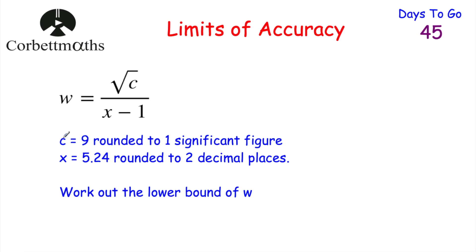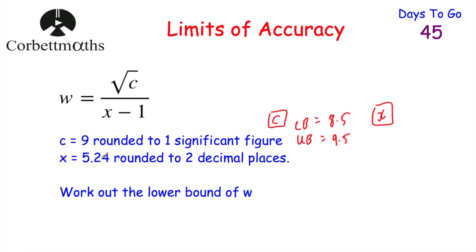Let's start by looking at the information given. c equals 9 rounded to one significant figure, so let's find the lower bound and upper bound for c. The lower bound for c is 8.5 and the upper bound for c is 9.5. For x equals 5.24 rounded to two decimal places: the lower bound for x is 5.235 and the upper bound for x is 5.245. Now we want to find the lower bound for w — the lowest possible value for w. Because of the division, we want the lowest value on the numerator and the biggest number on the denominator.